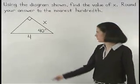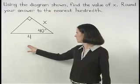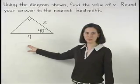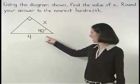Notice however that our right triangle is positioned differently than in the previous examples. We're given a 40 degree angle.